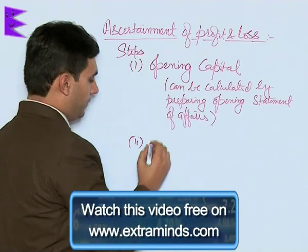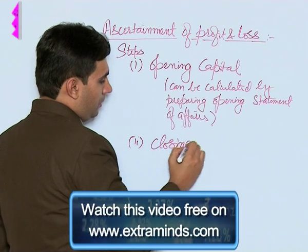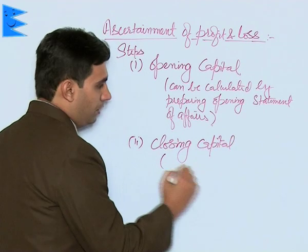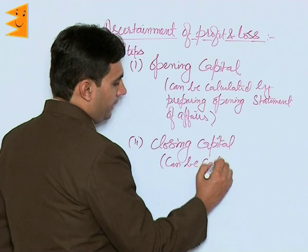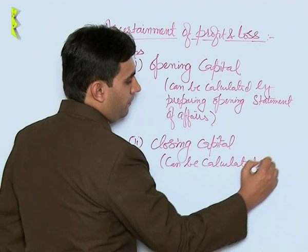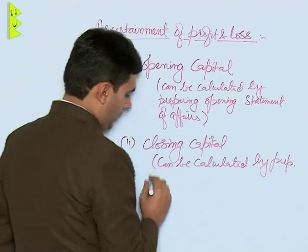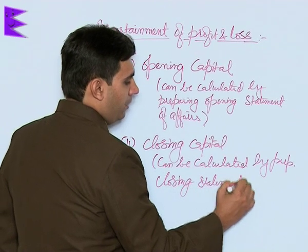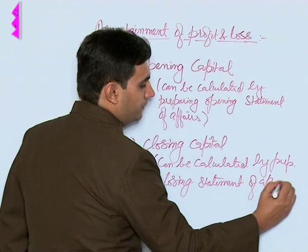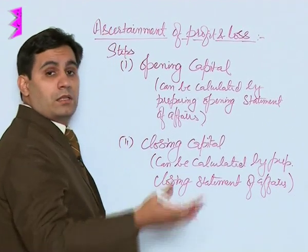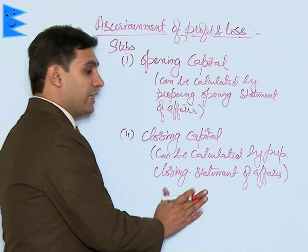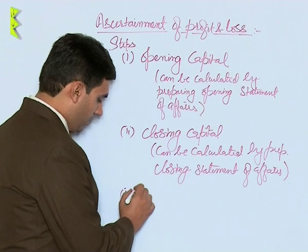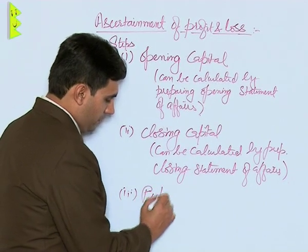The second step is to calculate closing capital. Closing capital can be calculated by preparing a closing statement of affairs — that is, a statement of affairs at the end of the year, which shows the closing figures.